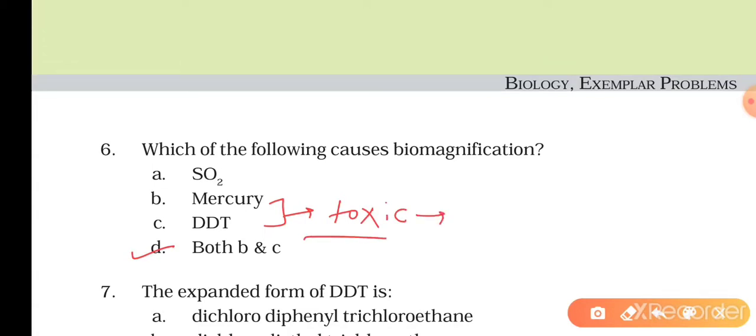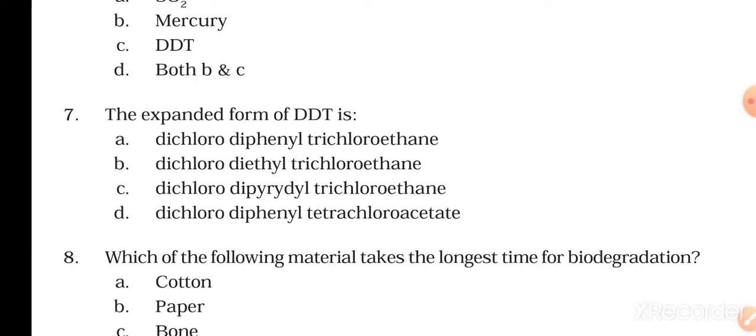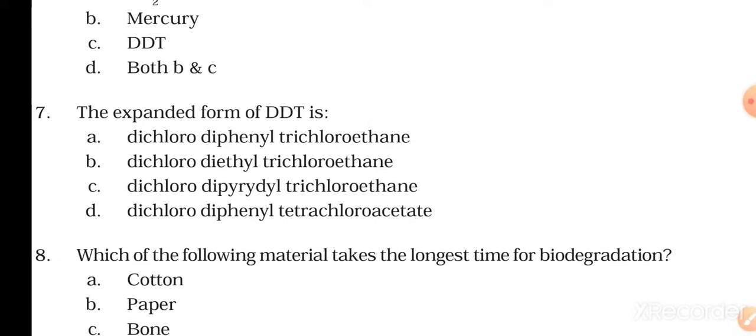The seventh question is: the expanded form of DDT is... First, DDT chemical formula if we see is C14H9Cl5. And if we look at its structure formula, it has two chlorophenyl groups, one chlorophenyl, second chlorophenyl...